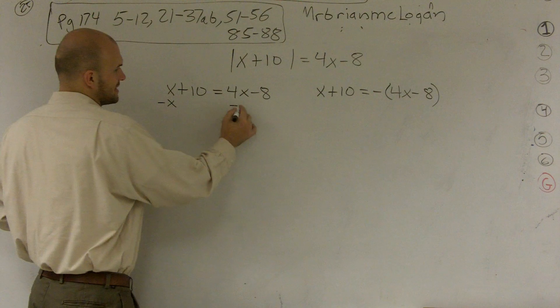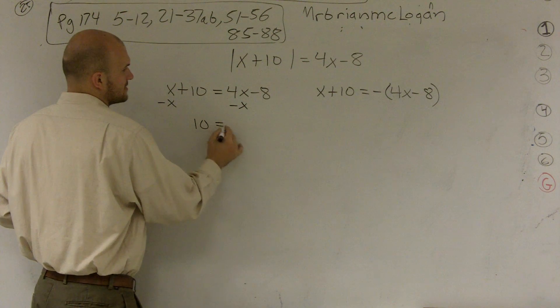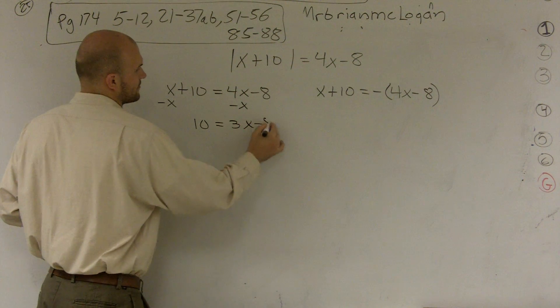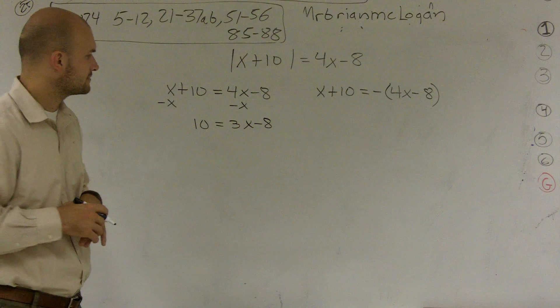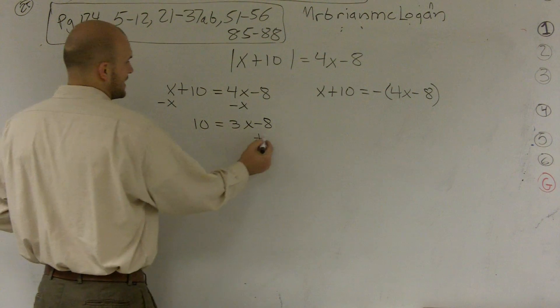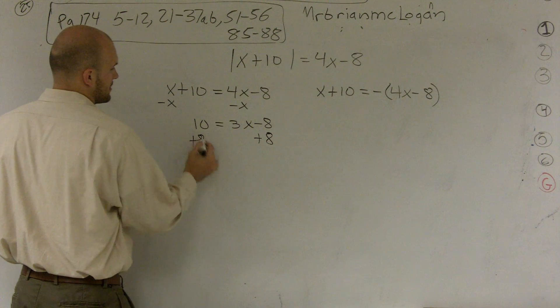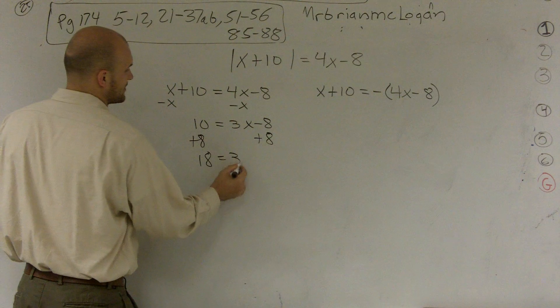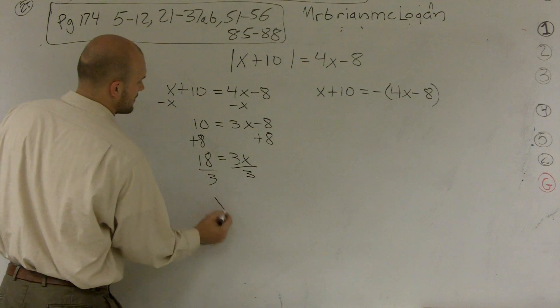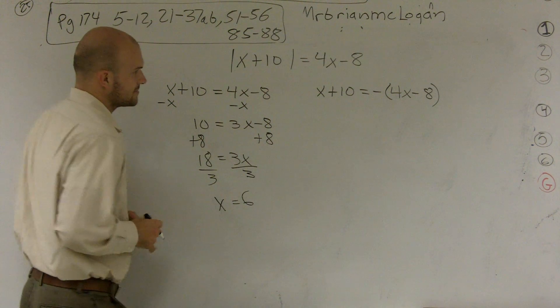So I'm going to subtract an x on both sides. 10 is equal to 3x minus 8. And then I add an 8. And I get 18 equals 3x. Divide by 3, x is equal to 6.